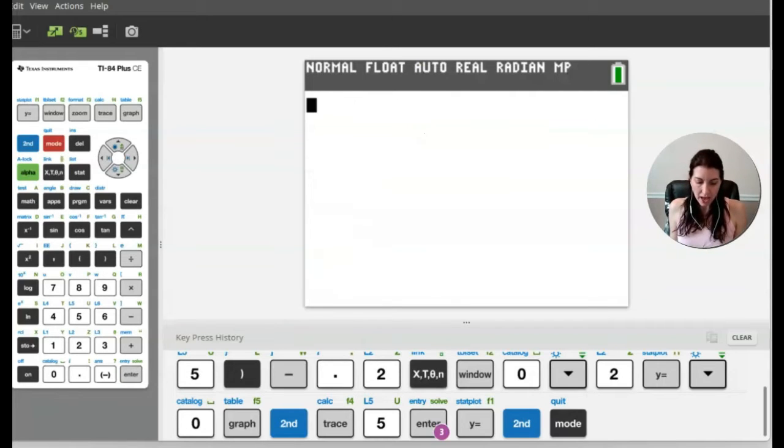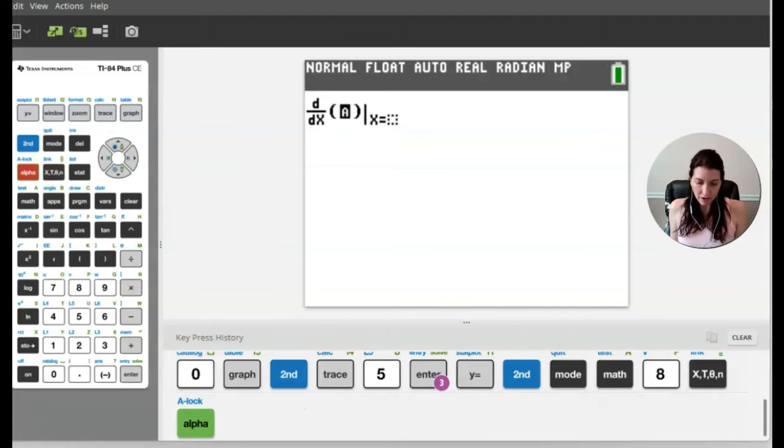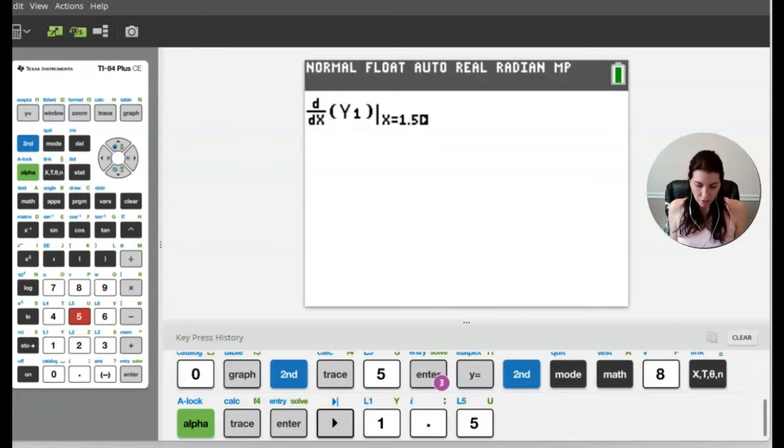So when I head back here to the main screen and I want to find the derivative, I can just go straight to Y1 and find that derivative at 1.5.